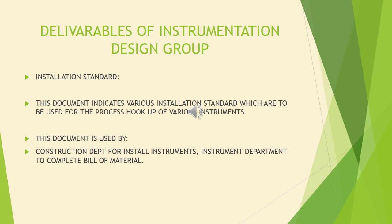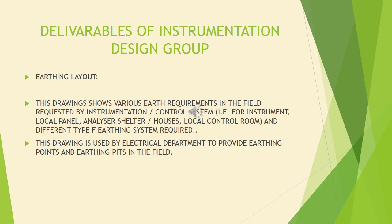Installation standards indicate various installation standards to be used for the process hookup of various instruments. This document is used by the construction department to install instruments and by the instrument department to complete the bill of material. The earthing layout drawing shows various earthing requirements in the field for instruments, local panels, analyzer shelters, houses, and local control rooms, including different types of earthing systems. It is used by the electrical department to provide earthing points and earthing pits in the field.